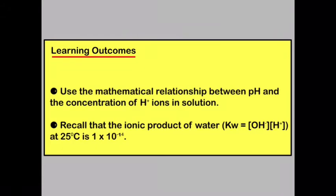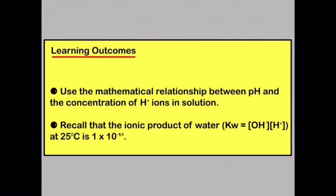By now you should be able to use the mathematical relationship between pH and the concentration of H+ ions in solution. You should also recall that the ionic product of water at 25 degrees C is 1 times 10 to the minus 14. Thank you.